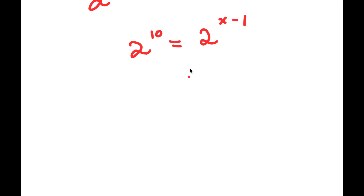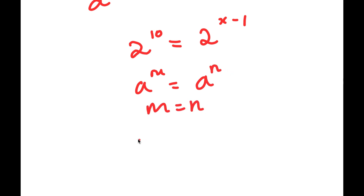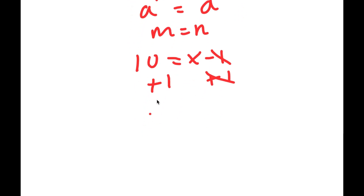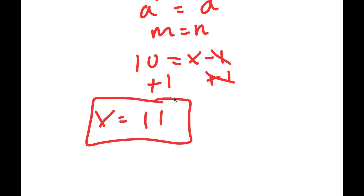Now, if I have something in the form a to the power of m is equal to a to the power of n, this means that m is equal to n. So in this case, 10 is equal to x minus 1. Adding 1 to both sides, x is equal to 11.